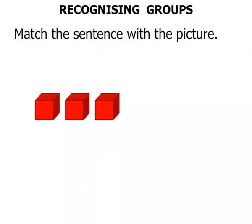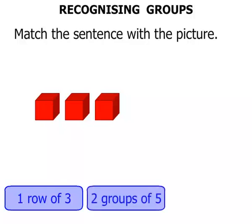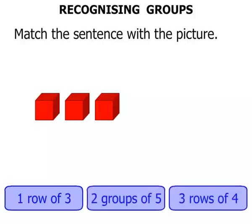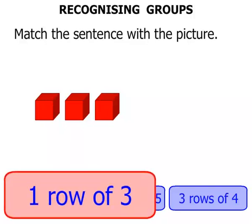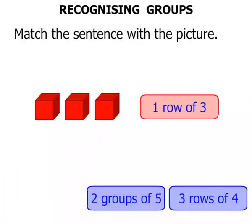Now this next one. Do we have one row of three, or two groups of five, or three rows of four? What do you think we've got there? Well, simply we have one row of three, because there's three in the row.